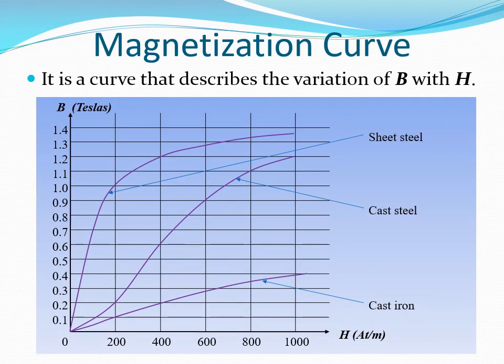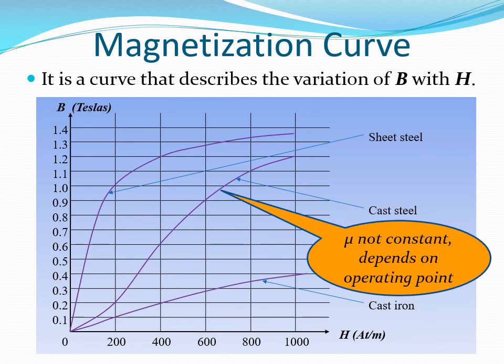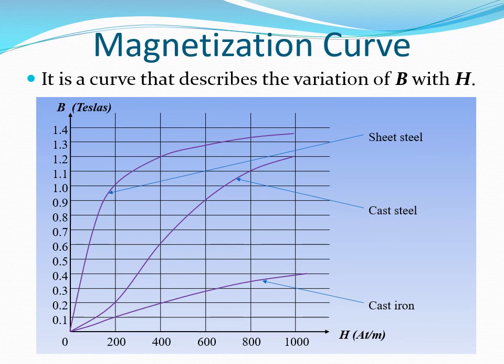A magnetization curve is a curve that describes the variation of B with H. In the diagram, we have magnetization curves for sheet steel, cast steel, and cast iron. As we can notice, the variation of B with H is not linear. As a result, the value of permeability is not constant but depends on the operating point. When we are given a value of H, we can read off the value of B from the magnetization curve. Similarly, if we are given a value of B, we can read off the value of H. A lot of analysis problems require reading off the value of B or H when given the other quantity.